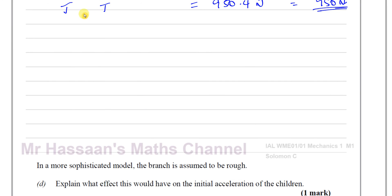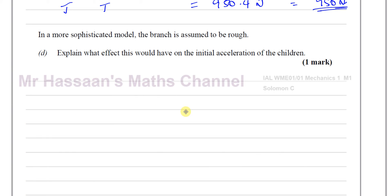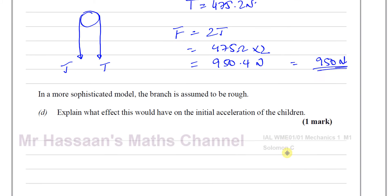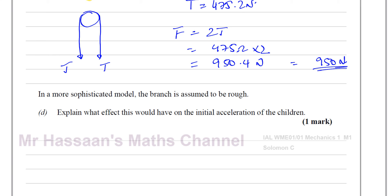And then in part D, it says in a more sophisticated model, the branch is assumed to be rough. Explain what effect this would have on the initial acceleration of the children. Well, if the branch is rough, that means there's going to be friction in the pulley. The branch is the pulley. There's friction in the pulley, between the rope and the pulley. Therefore, the acceleration will be less. It will definitely be less.